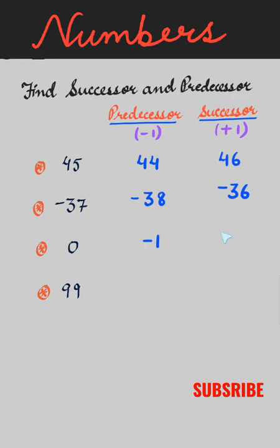Now the predecessor of 0 is minus 1, and the successor of 0 is 1. The predecessor of 99 is 98, and its successor is 100.